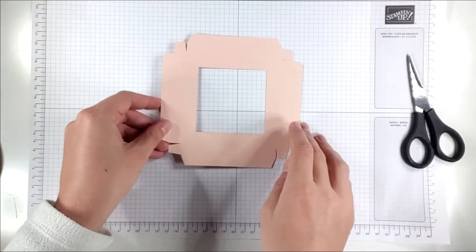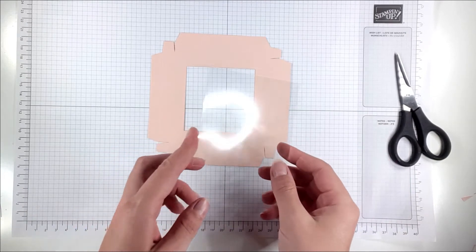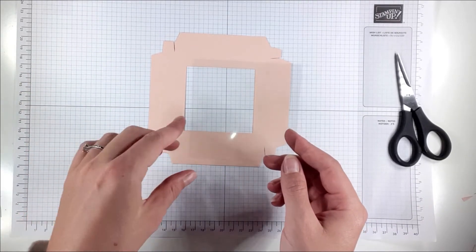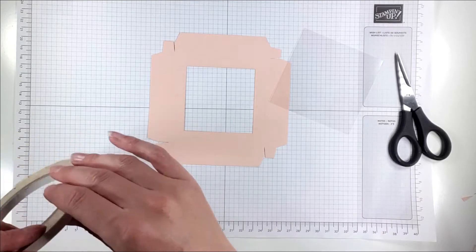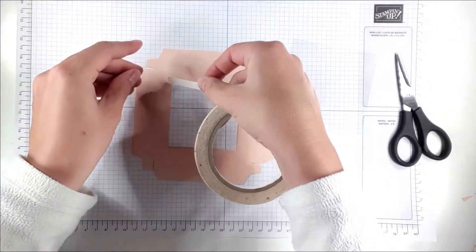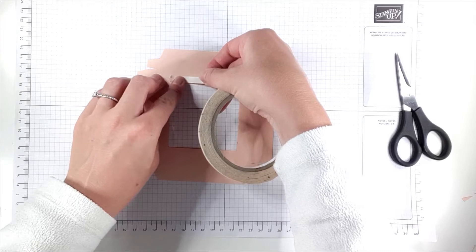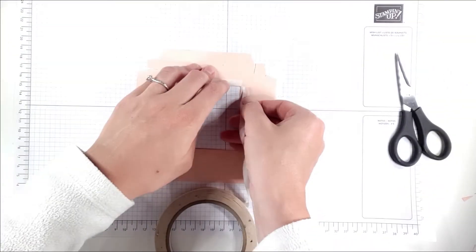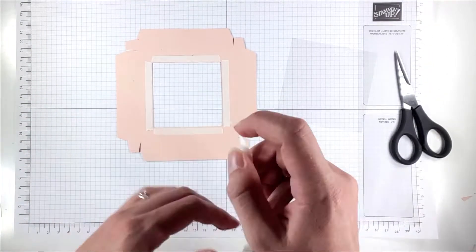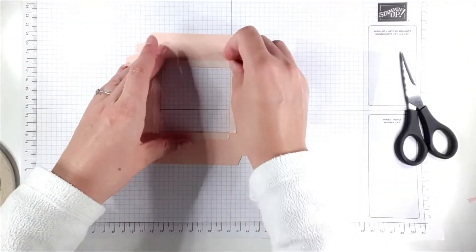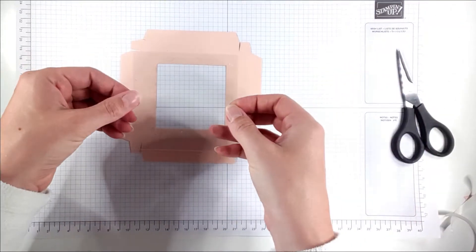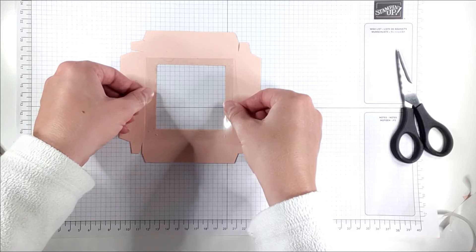Then we come back and we've got our lid with the square in the middle. I've cut a piece of window sheet - it's just over three and a half inches square - and I'm just going to put some tear and tape on the back of the lid just right around the square. Then we can just stick our window over the top of it.